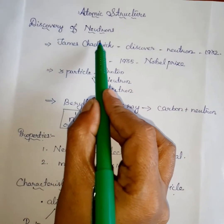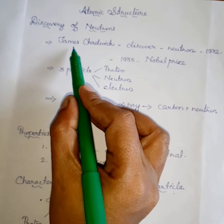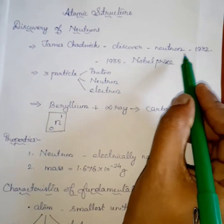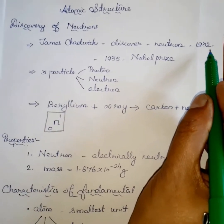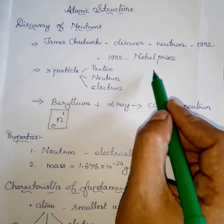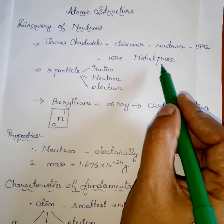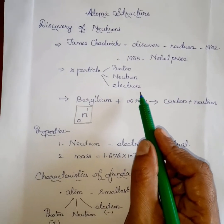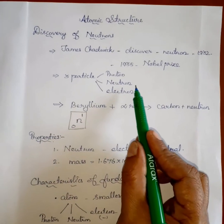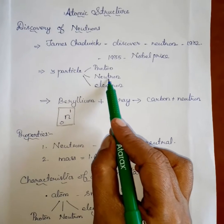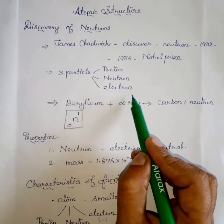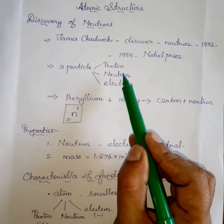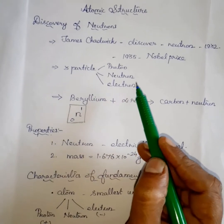Now we are going to study the discovery of neutrons. James Chadwick is the scientist who discovered the neutron in the year 1932. In 1935, he was awarded the Nobel Prize in Physics for his discovery. There are three particles in an atom: proton, neutron, and electron. Proton and neutron are present in the nucleus, while electrons revolve around the nucleus in a closed circular path.